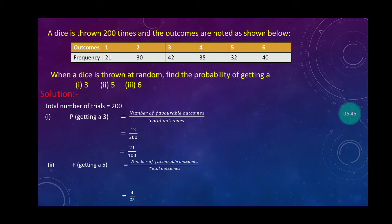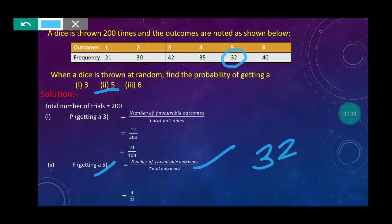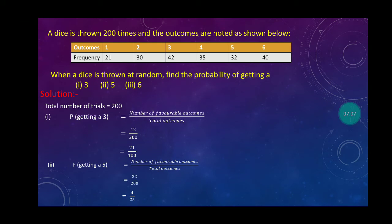Same pattern. Second point, P(getting 5). In second point, we need to get 5. P(getting 5), using the formula. Check the outcomes: 5 came 32 times. So we write 32 upon total outcomes 200. Simplifying 32 upon 200 by dividing by 8: 8 goes into 32 four times, and 8 into 200 gives 25. This is your answer: 4 upon 25.